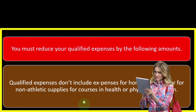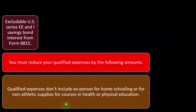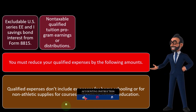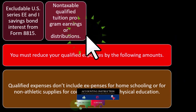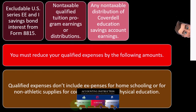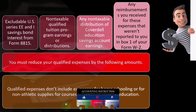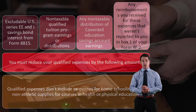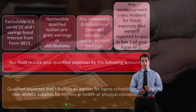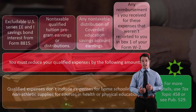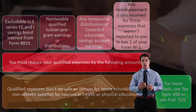You must reduce your qualified expenses by the following amounts: excludable U.S. Series EE and I savings bond interest from Form 8815; non-taxable qualified tuition program earnings or distributions; any non-taxable distribution of Coverdell Education Savings Account earnings; and any reimbursement you received for these expenses that wasn't reported to you in Box 1 of your Form W-2. For more information, use Tax Topic 458 or see Publication 529.